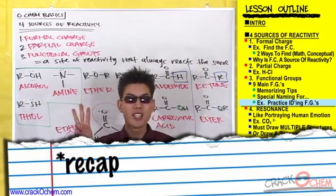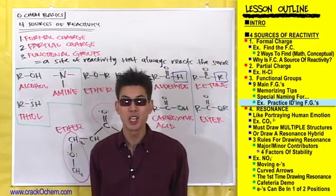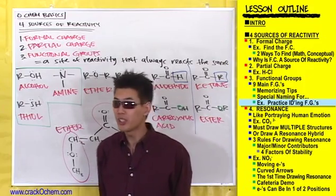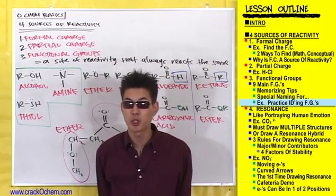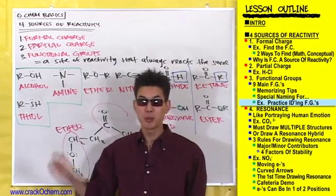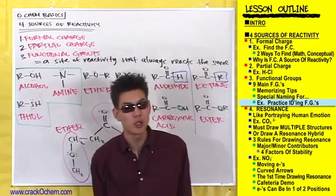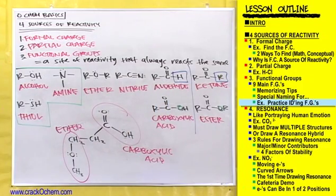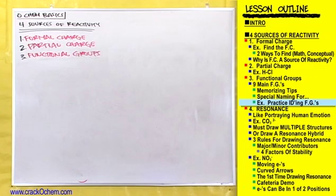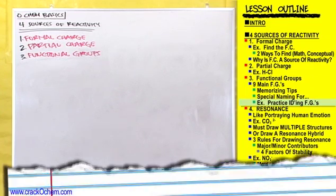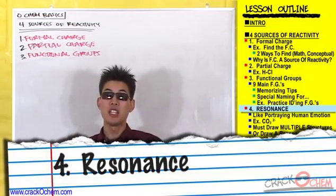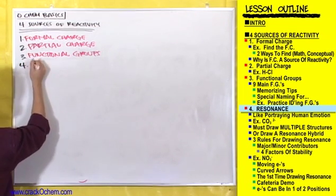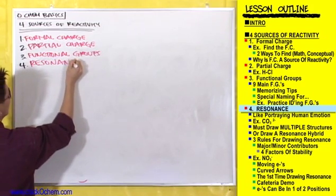So far, there are three things to consider when looking for what's going to react in a compound: number one is formal charge — full positive and negative charges on atoms; number two is polarity — partial positive and negative charges; and number three is the nine different functional groups. Now let's look at our fourth and final source of reactivity: resonance.